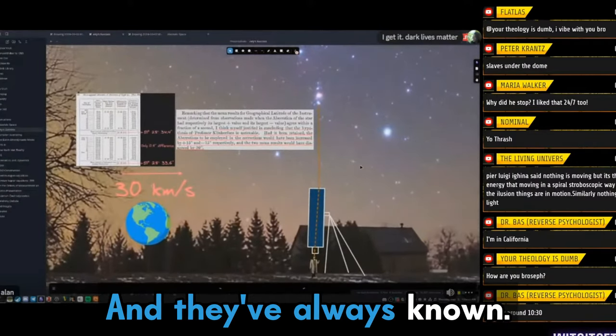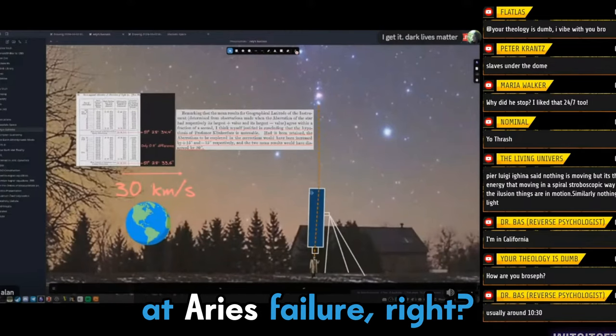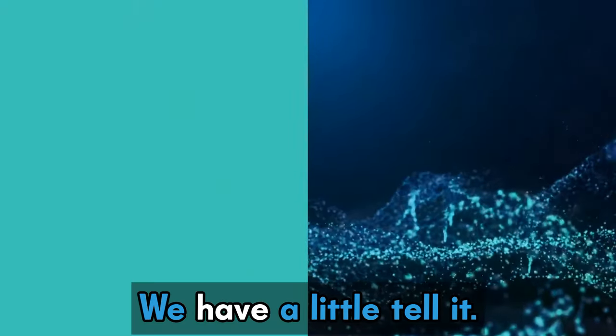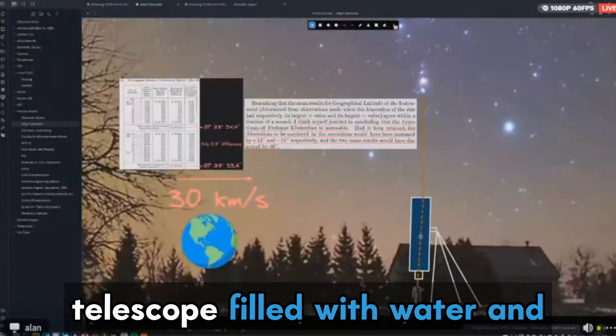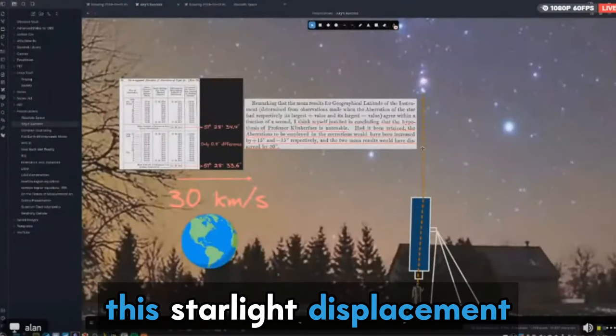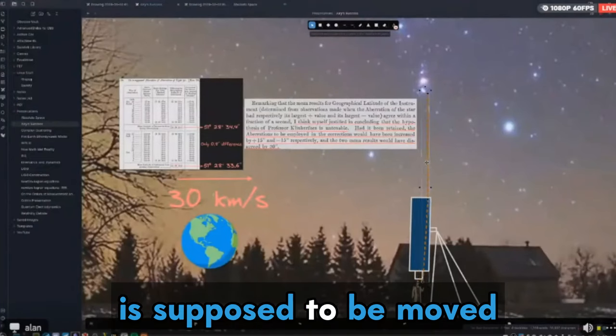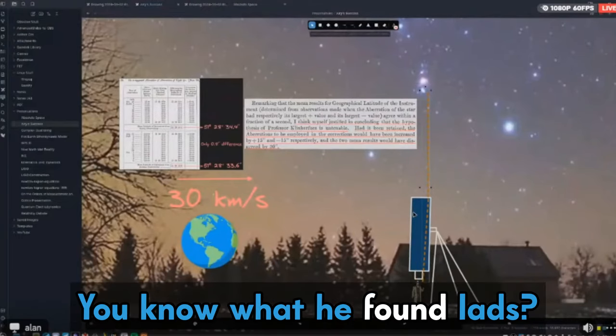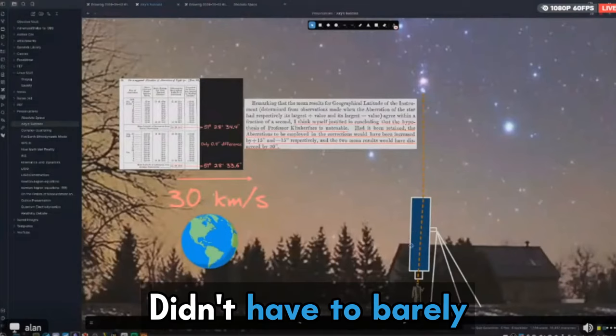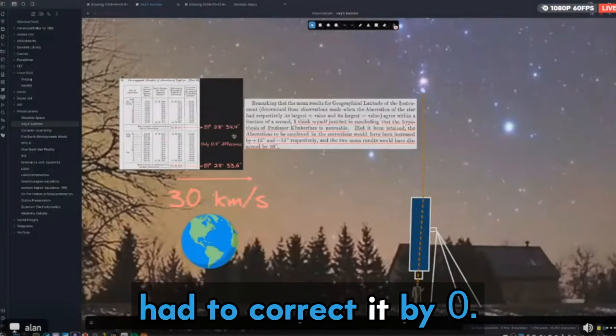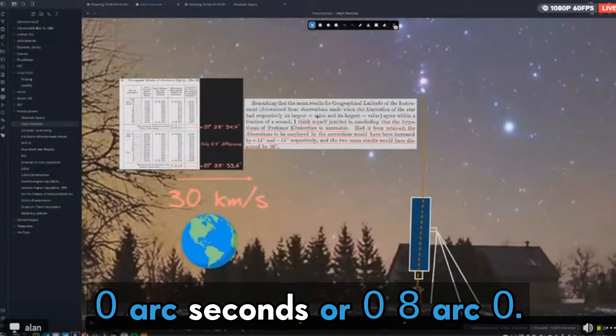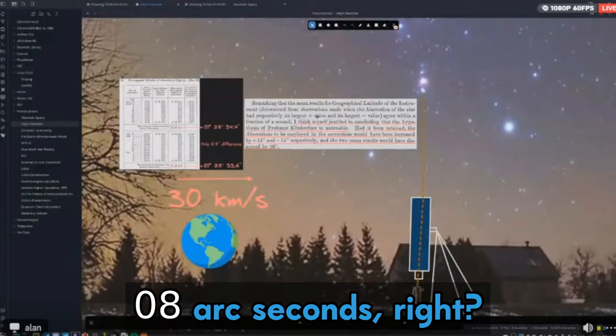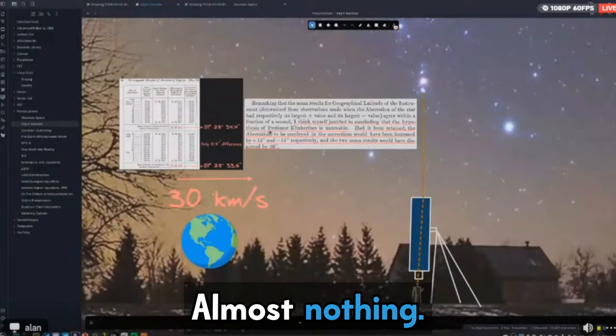And they've always known. So here we're looking at Airy's failure, right? We have a little lad with a telescope filled with water. And this starlight displacement is supposed to be moved such that he's going to have to correct his telescope to get it in there. And you know what he found lads? Nothing. Didn't have to, barely had to correct it by 0.08 arc seconds, right? Almost nothing.